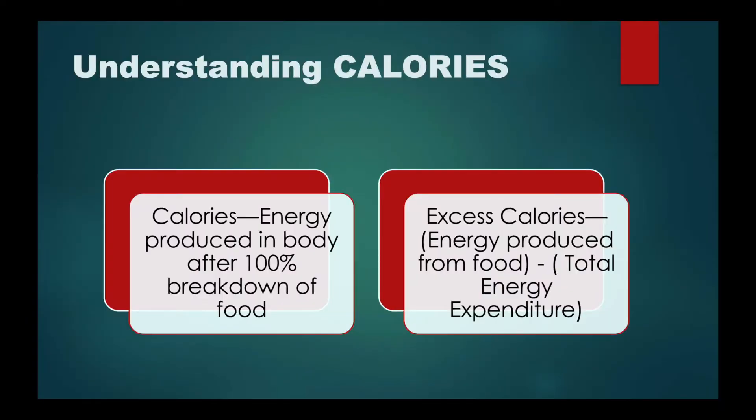Now, let's see what a calorie is. As discussed in the previous video, whatever we eat basically has carbohydrate, fat, and protein. The complete breakdown of these leads to the production of a certain amount of energy — that is known as calories.